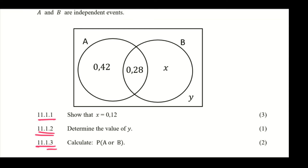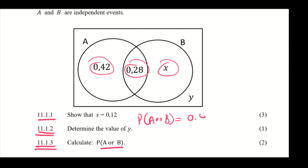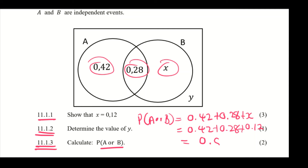For question 11.1.3, we are asked to find P(A or B), the union of A and B — everything inside the diagram. P(A or B) equals 0.42 plus 0.28 plus X, and since X equals 0.12, adding everything gives 0.82.